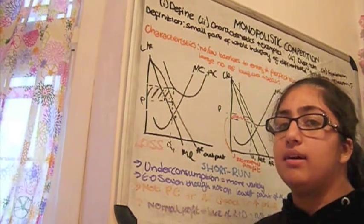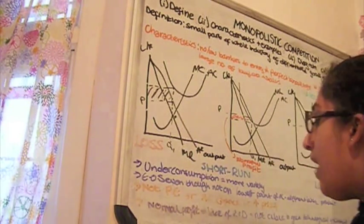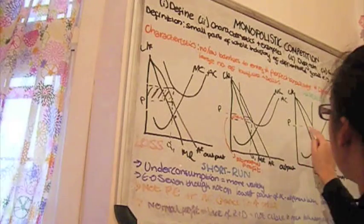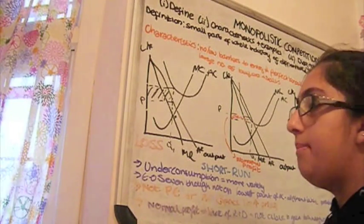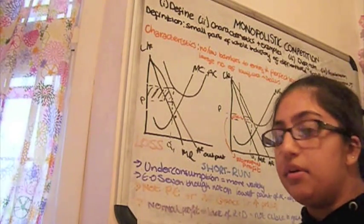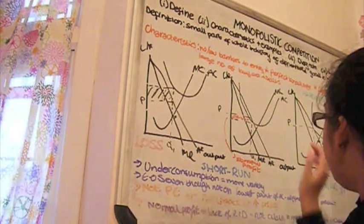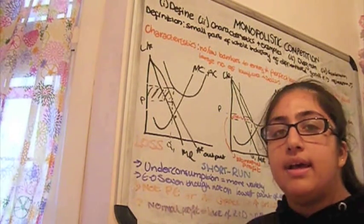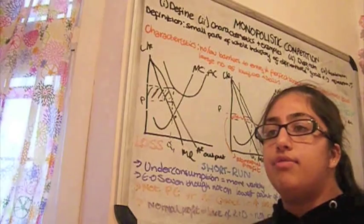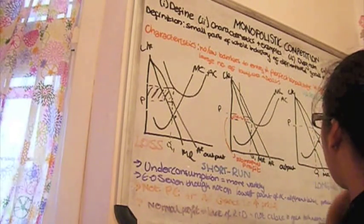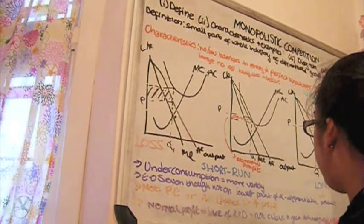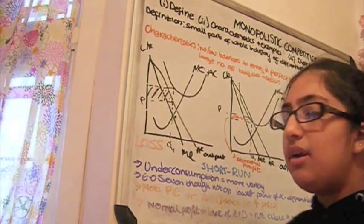This normal profit they make in the long term is not very good because this implies that there's a lack of profit they can invest into research and development. And this lack of profit in research and development will mean that they're not going to be able to gain technical economies of scale.